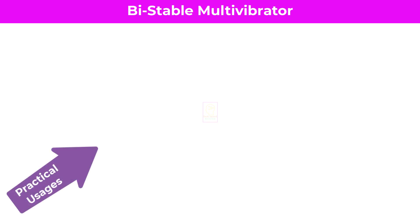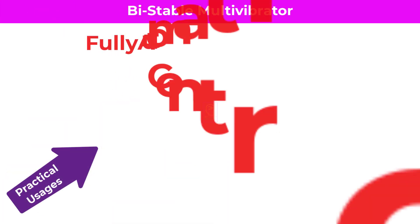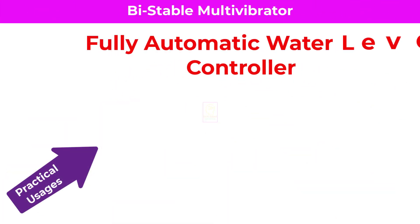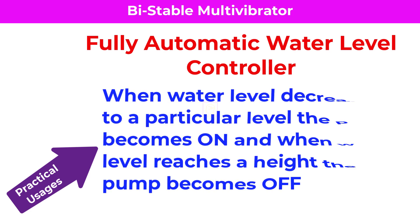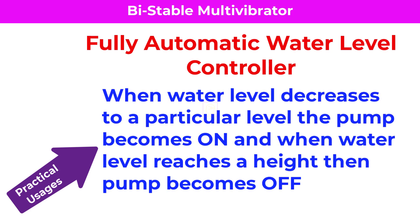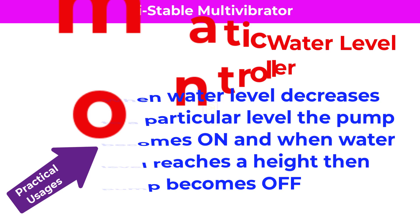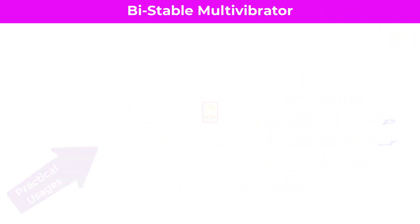Hi all, welcome to the new episode of TechInsert. One of the practical usages is a fully automatic water level controller. When the water level decreases to a particular level the water pump becomes on, and when the water level reaches a particular height then the pump becomes off. For that purpose we are using this circuit.